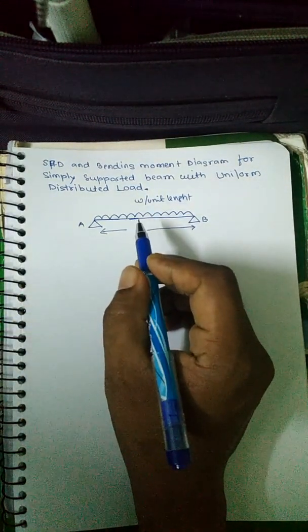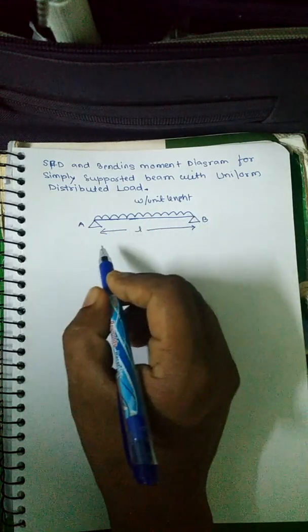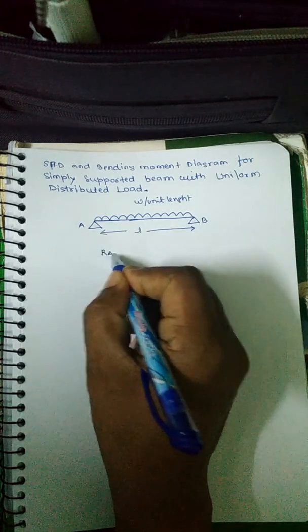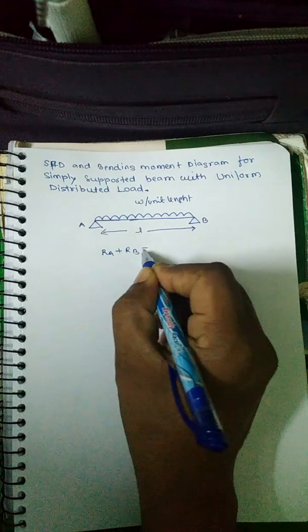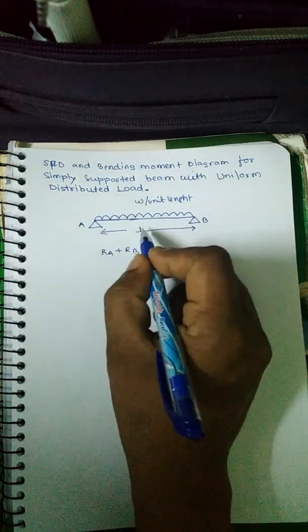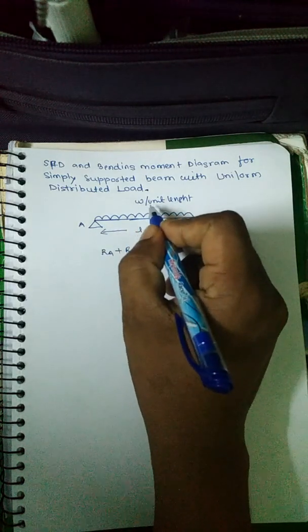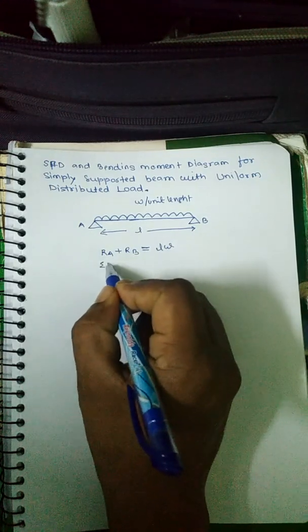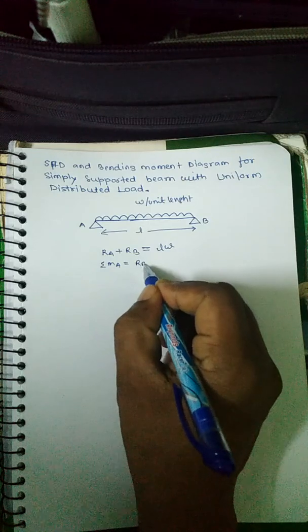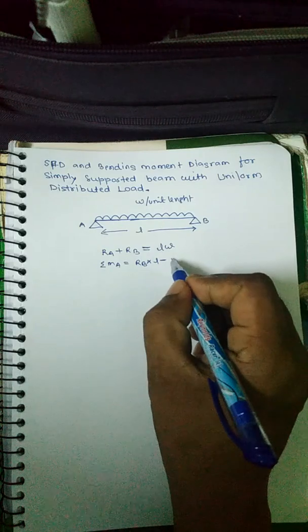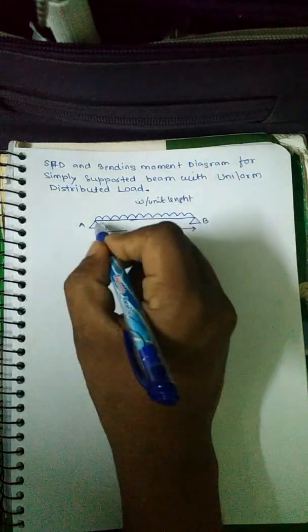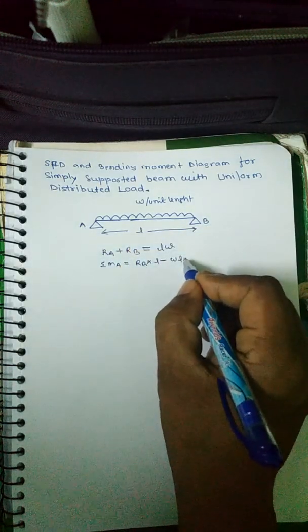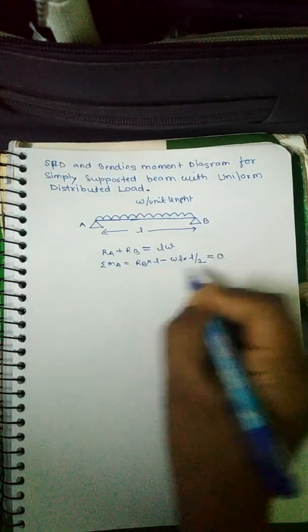First we will draw the shear force diagram, then find the bending moment diagram. The reactions at RA and RB sum to the total load, which is w times L. Taking moments about A, we get RB times L minus the total weight wL acting through the center of mass at distance L/2 from A, equal to 0.